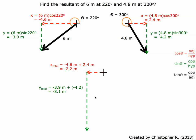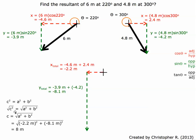To find this resultant distance, we're going to use the Pythagorean theorem: a squared plus b squared equals c squared. Isolating c, we take the square root of a squared plus b squared. Putting in our numbers, we get 8 meters. We're rounding to 8 meters because our lowest significant figure is 1.